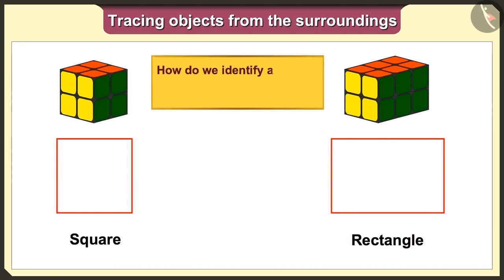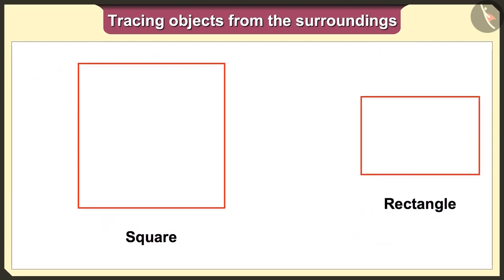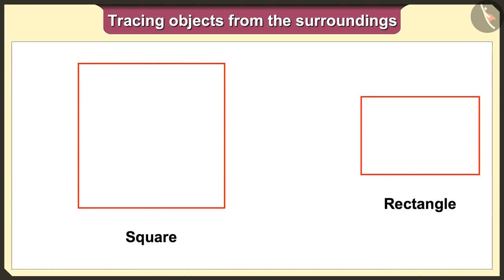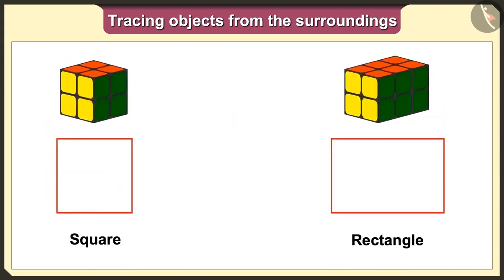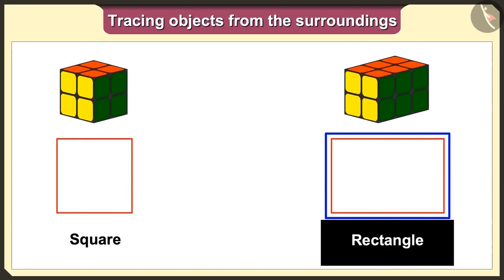But how will we identify this square and rectangle shape? Look carefully — the measurements of the sides are the same in this shape, so this is a square. In a rectangle shape, the measurements of the opposite sides are the same. Now I understand very well that the shape we get when we trace the cuboid is not a big square, but it is a rectangle.